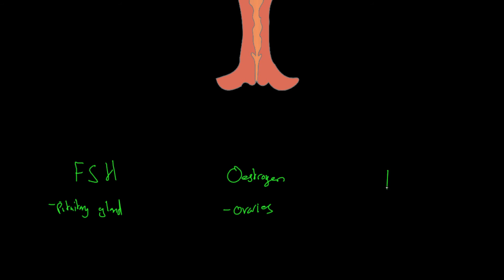And lastly we have LH. You're fine just remembering it as LH but it actually stands for Luteinizing Hormone. And LH is also produced in the pituitary gland. So if you want to remember those then the ones which are shortened, the ones with abbreviations, FSH and LH, they are both produced in the brain. So abbreviations, brain. And oestrogen is produced in the ovaries.